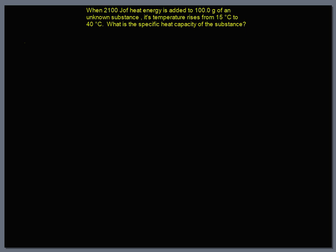We have our heat problem given. 2100 joules of heat energy is added to 100 grams of an unknown substance. Its temperature rises from 15 degrees Celsius to 40 degrees Celsius. What is the specific heat capacity of the substance?